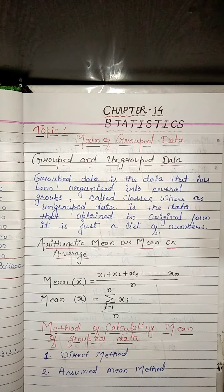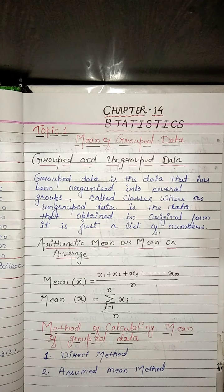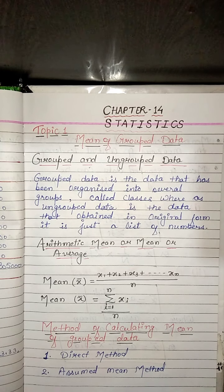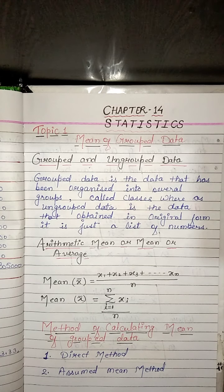Sometimes grouped data is discontinuous — for example, 1 to 4, 5 to 8, 9 to 12. Then we convert it into continuous data by subtracting 0.5 from the lower limit and adding 0.5 to the upper limit of each class interval.